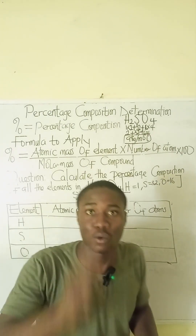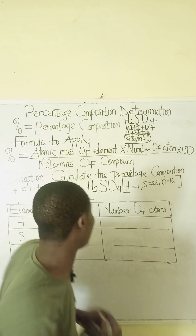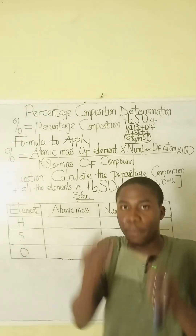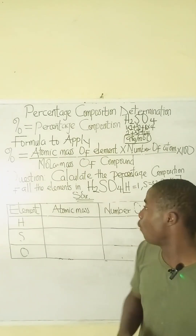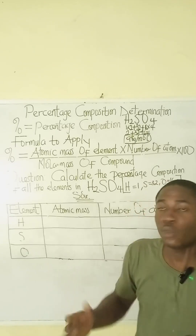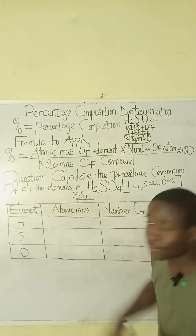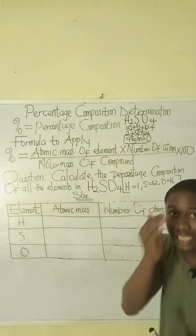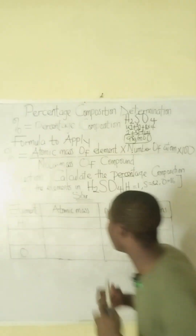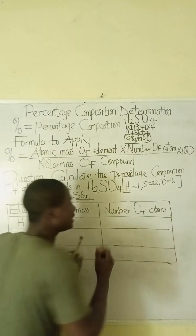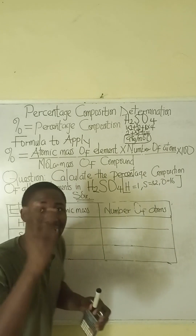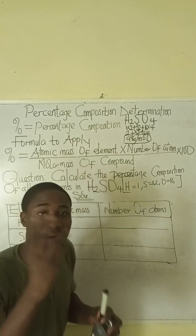When we add those values — 2 + 32 + 64 — the molar mass of the compound is 98 grams per mole. Now let us go ahead to solve for the percentage composition of each element. We'll fill in a table to help us do that.